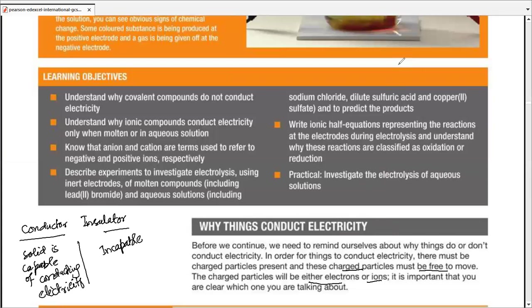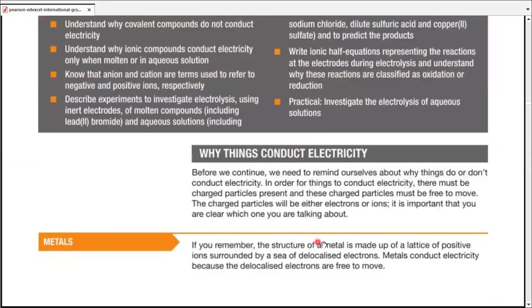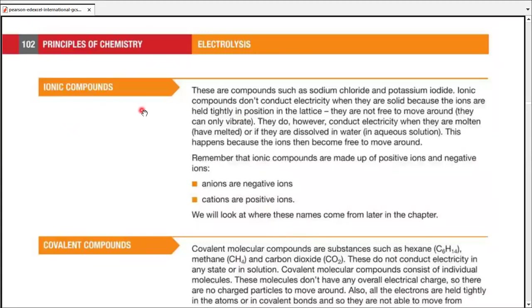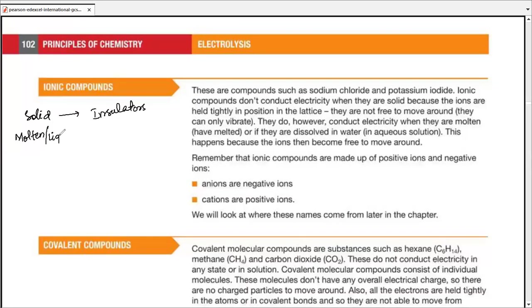We have different words for liquids now. Metals are made up of positive ions surrounded by a sea of delocalized electrons, and metals conduct electricity because those delocalized electrons are free to move. For ionic compounds, we bifurcate them into three states: in solid form they are pure insulators, and in molten form they are good conductors.